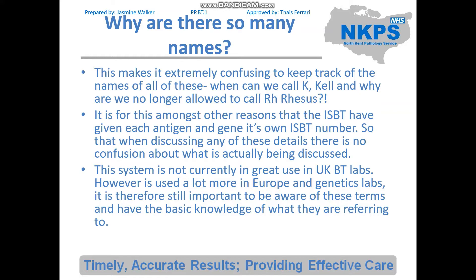This makes it extremely confusing to keep track of the names of all of these — when can we call K 'Kel'? And why are we no longer allowed to call RH 'Rhesus'? It is for this, amongst other reasons, that the ISBT have given each antigen and gene its own number, so that when discussing these details there's no confusion. The numerical format is more useful for data submission, ensuring everyone uses the same format. This system is not currently in great use in UK blood transfusion labs, however it is used a lot more in Europe, and it is still important knowledge to be aware of.